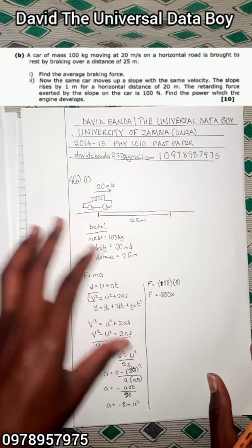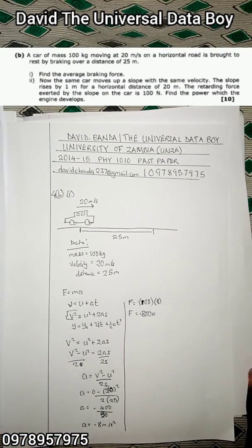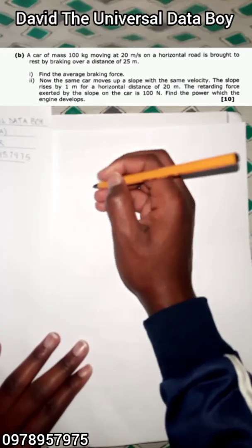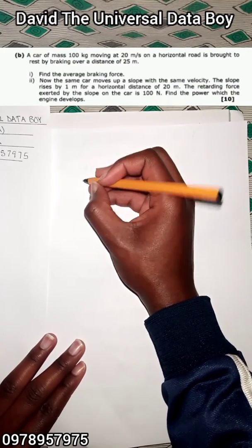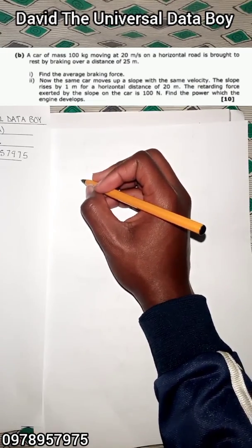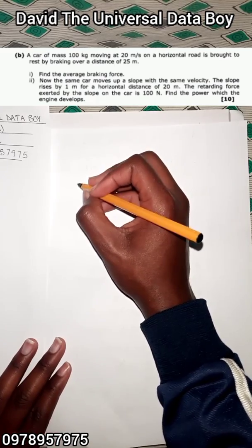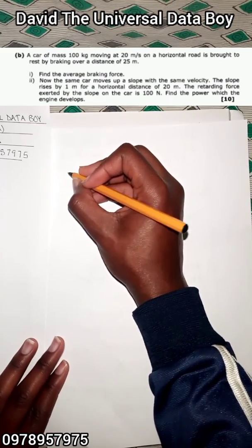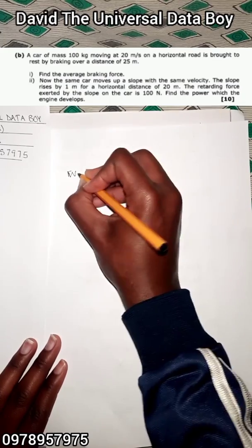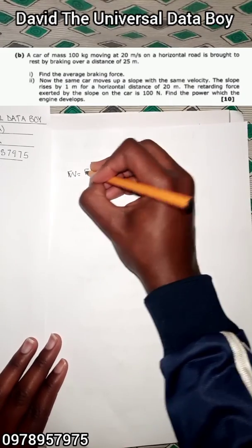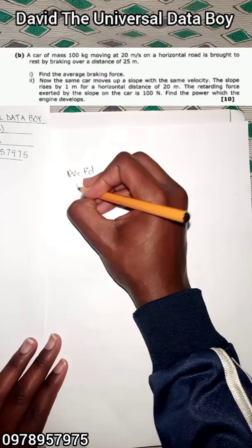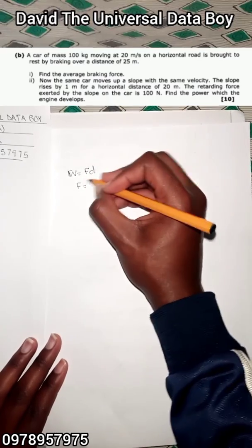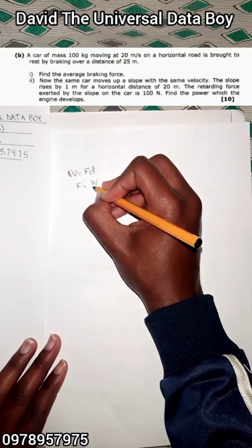Now let me show you another way — using the conservation of energy, or the law of conservation of energy. The work done is equal to the force times the distance. Rearranging, the force is equal to the work divided by the distance.